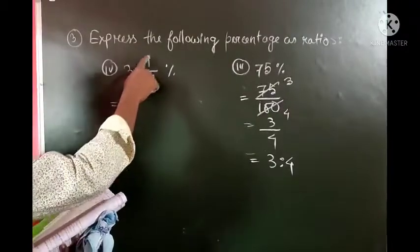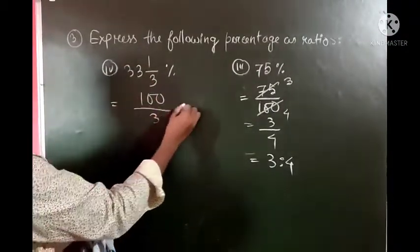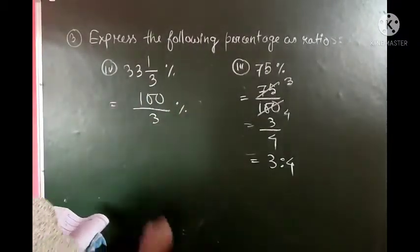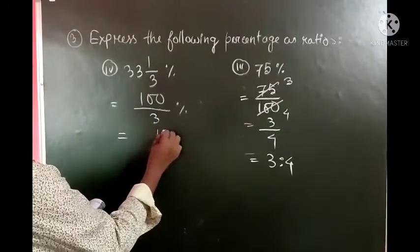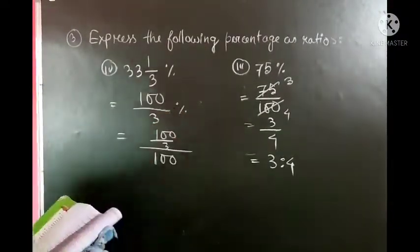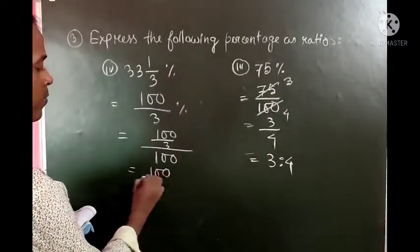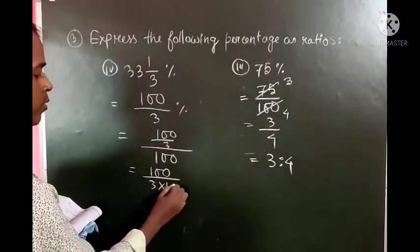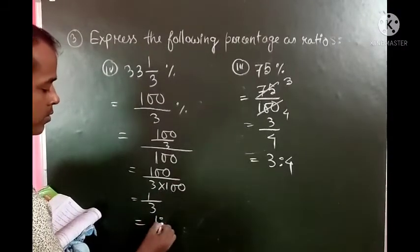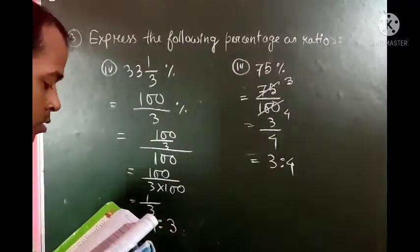The next one is 33 and 1 by 3 percent, which is 100 by 3 percent. So we divide by 100 and remove the percentage sign, giving 100 by 3 into 100, which equals 1 by 3. And in ratio form, 1 is to 3.